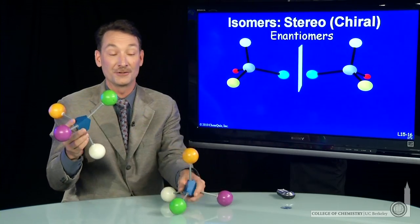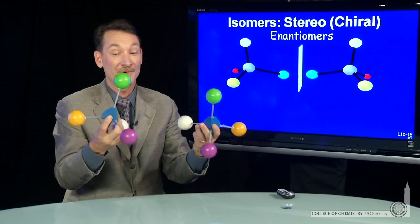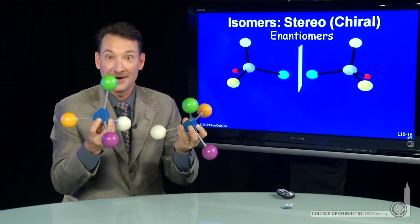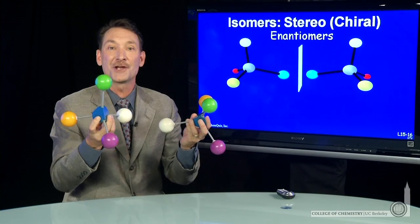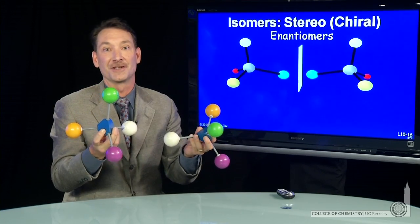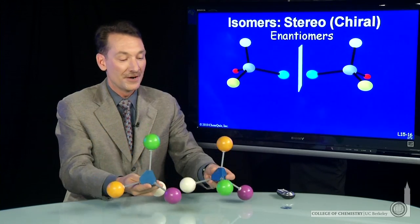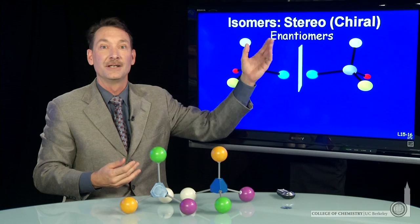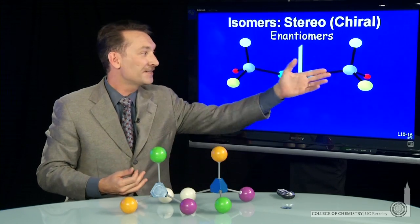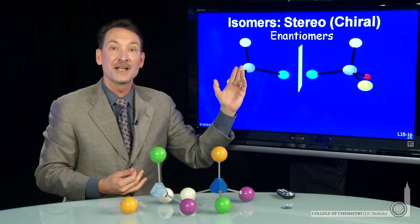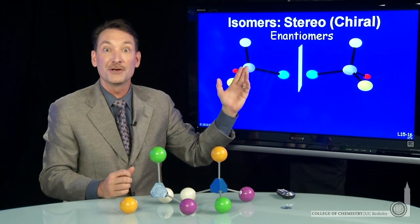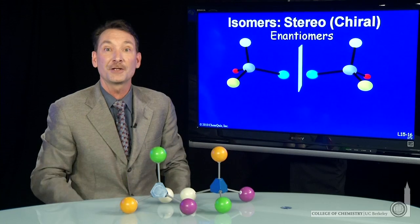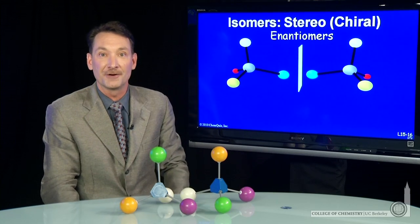These two molecules, though at first glance appear identical, are actually stereoisomers of each other. There are stereoisomers called enantiomers. When I have this kind of non-superimposable mirror image, the isomers are called enantiomers, and the molecules are called chiral.